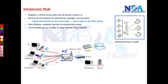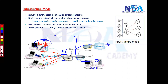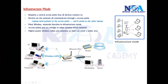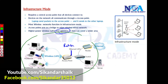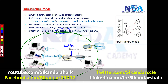Access points can act as a bridge between the wired and wireless network. Wireless users can still access the internet or dedicated servers on the wired network — the access point bridges traffic between wireless and wired users. The access point has antennas that radiate signals, creating a coverage area; as long as you are within that coverage area, you can connect to the access point and be part of the network.